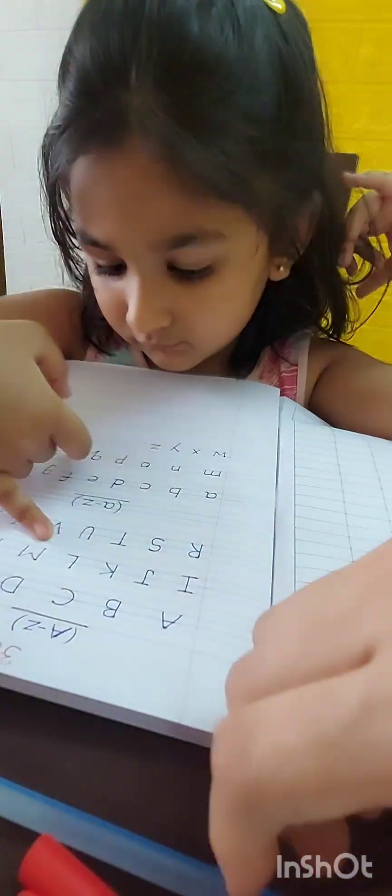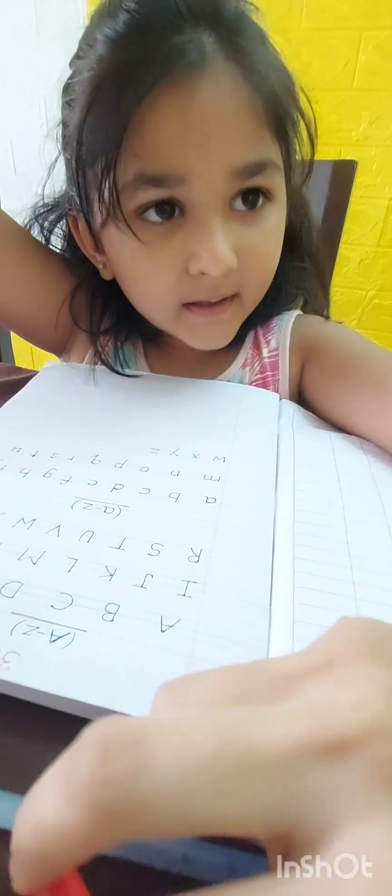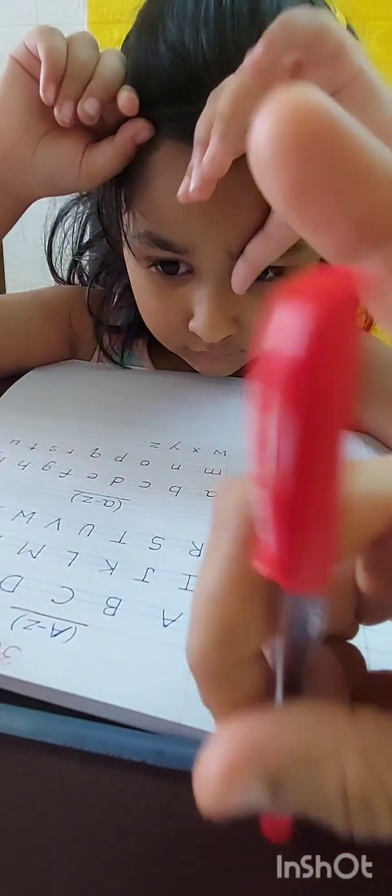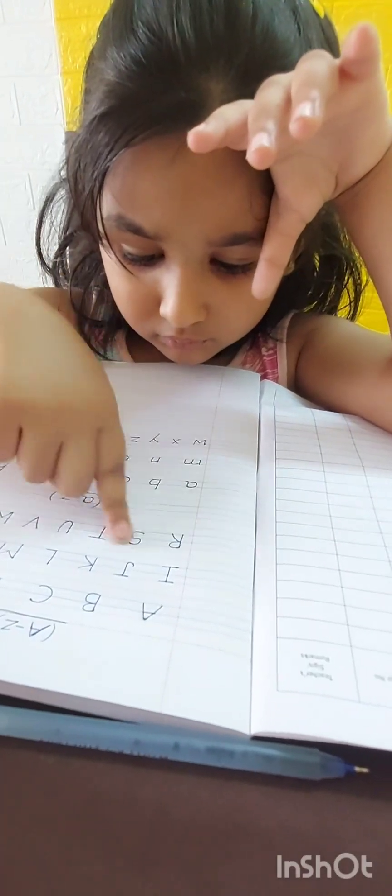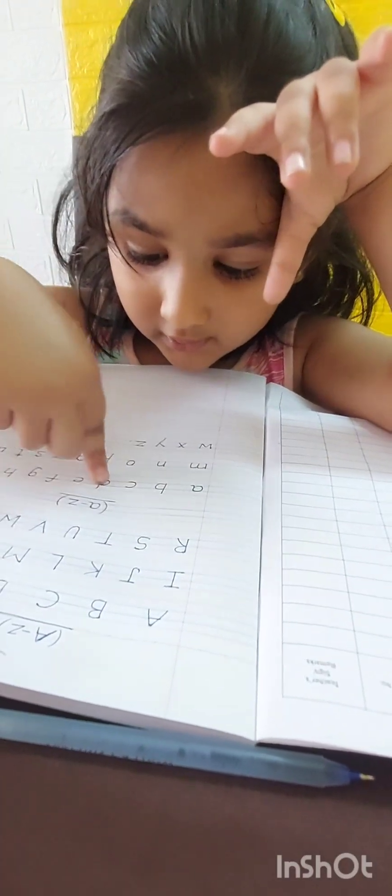Now, D. D. Small, big. Small. Small. Small here. Where is d? D. D. D for dog. Kaan? D. Perfect.